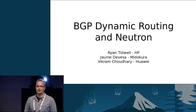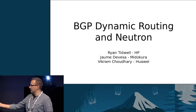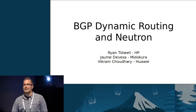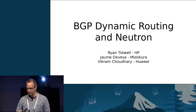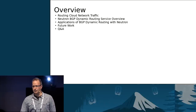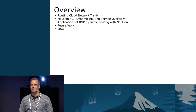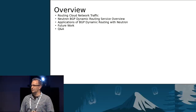We'll get started now. I'm Ryan, this is Jaume, this is Vikram. We're going to be talking today about BGP dynamic routing and Neutron and some of the work we've been doing there over this last cycle. We're going to touch on routing cloud network traffic in general, giving an overview of the dynamic routing service we've been putting together, some of the applications of it, some future work, and hopefully some Q&A at the end.